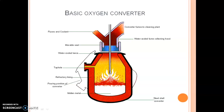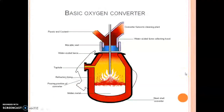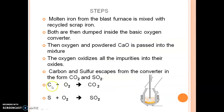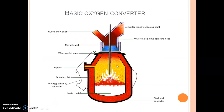Oxygen oxidizes all the impurities present in the cast iron. Carbon present in the cast iron gets oxidized into carbon dioxide. In a similar way, sulfur also gets oxidized into sulfur dioxide. You can see this equation: carbon is getting oxidized into CO₂ and sulfur is getting oxidized into SO₂. These two impurities, being gases, escape from the converter.